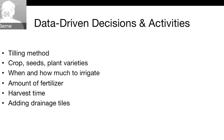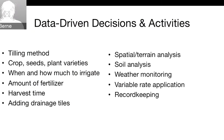Data-driven decisions include: how you till (if at all), what crops and seed varieties to plant, when and how much to irrigate, how to seed, the amount of fertilizer to use, harvest timing, and even whether to add drainage tiles if flooding is expected. The main data activities to support those would be spatial or terrain analysis, soil analysis (particularly soil moisture, which changes often), monitoring the weather, variable rate application of seeds, water, fertilizers, or other inputs, and record keeping.